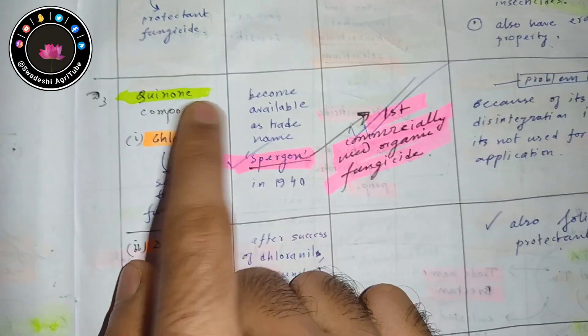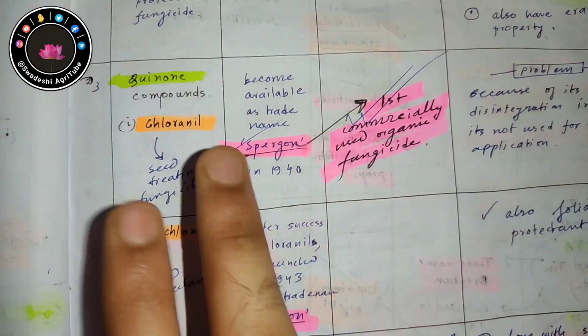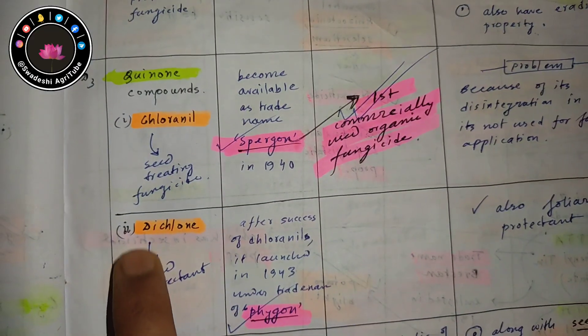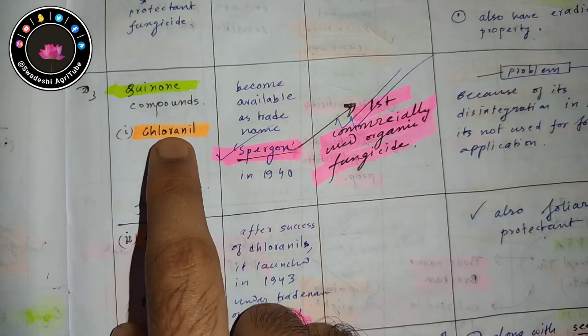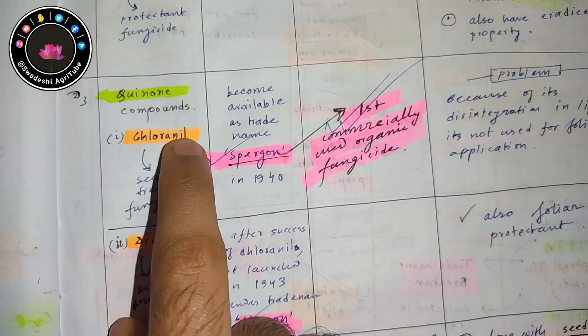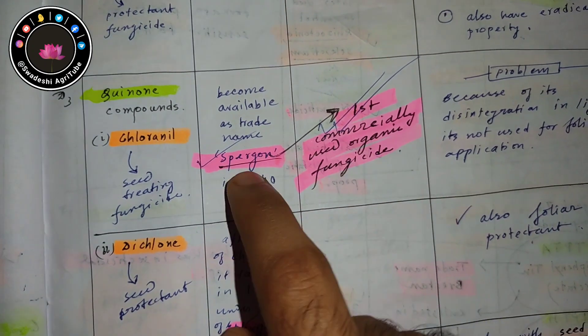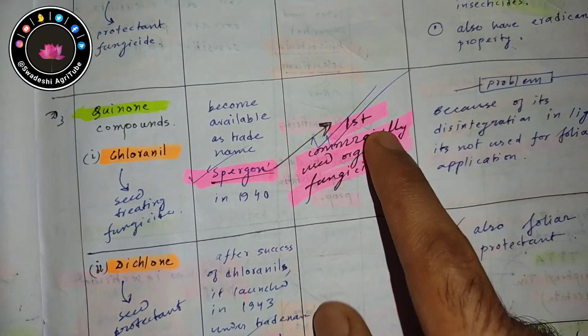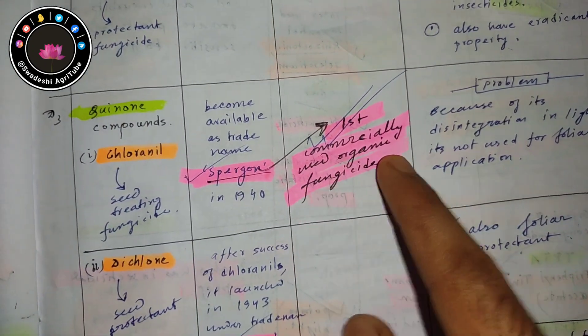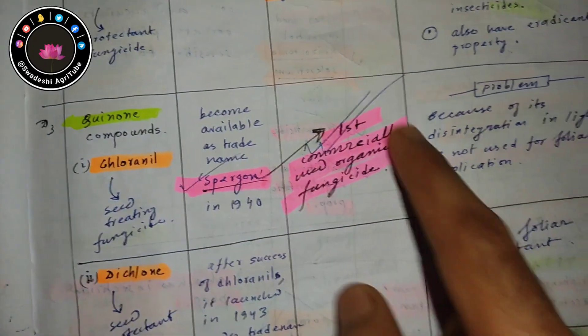The third one is quinone compounds. There are many quinone compounds, but two important ones are chloranil and dichlone. Remember the trade names only. Chloranil's trade name is Spargon, and here is one important point: Spargon is the first commercially used organic fungicide. This is the most important point here.